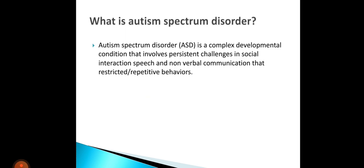Firstly, I will define what is Autism Spectrum Disorder. Autism Spectrum Disorder is a complex developmental condition that involves persistent challenges in social interaction, speech and non-verbal communication, and restricted repetitive behaviors. Autism means developmental disability. This is a lifelong or non-progressive disorder that begins before the age of 3 years, and it affects verbal or non-verbal communication and social interaction.